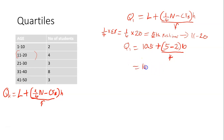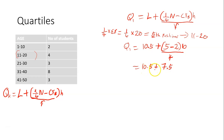So we have 10.5 plus — 5 minus 2 gives 3. And 3 times 10 is 30. 30 divided by 4 gives 7.5. So 10.5 plus 7.5 is 18. Hence, the first quartile is 18.